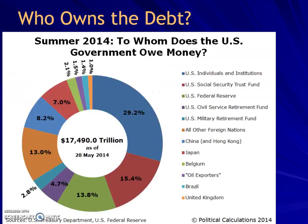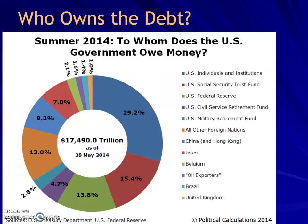When we look at who owns the debt, you've got US individuals and institutions, we owe money to the Social Security Trust Fund, the Federal Reserve, military retirement, foreign nations. There's China and Hong Kong, Japan, Belgium, the oil exporters, Brazil, the UK, and all other foreign nations.